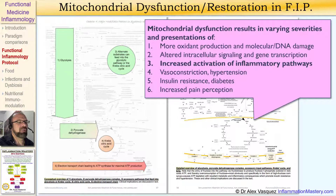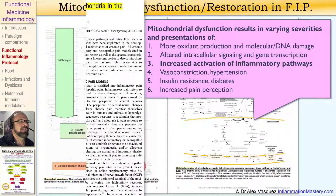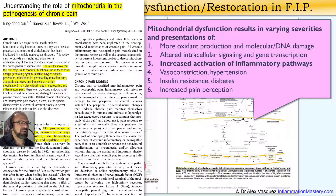For example, if you think of patients with migraine headache, they have numerous defects in their production of ATP because of defects in the electron transport chain, and those defects seen in patients with migraine headaches are almost identical to the defects seen in patients with fibromyalgia. Mitochondrial dysfunction results in varying severities and clinical presentations of increased oxidant production and molecular — including DNA — damage, altered intracellular signaling and gene transcription, increased activation of inflammatory pathways, insulin resistance and diabetes, and also increased pain perception.